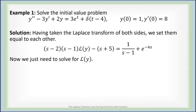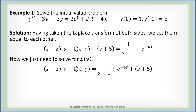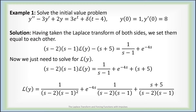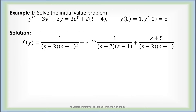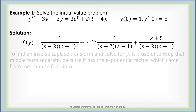Now we just need to solve for the Laplace transform of y. We move over the s plus 5 and divide everything by s minus 2 times s minus 1. So right now we have the Laplace transform of y is 1 over (s minus 2)(s minus 1) squared, plus e to the minus 4s times 1 over (s minus 2)(s minus 1), plus s plus 5 over (s minus 2)(s minus 1).